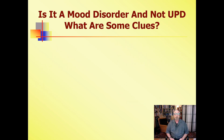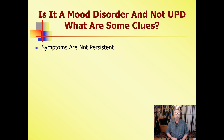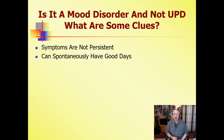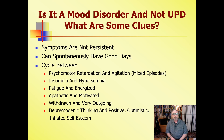What are the clues you look for so you don't miss the diagnosis? If you miss the diagnosis, these people have very severe morbidity and mortality, and you'll give them the wrong treatments and they won't get better. Symptoms are not persistent — they can spontaneously have good days. It's such a simple question to ask: 'When's the last time you had a day where you felt okay, where you weren't feeling terribly depressed?' You'll make your diagnosis in 50% of patients just by asking that one simple question.